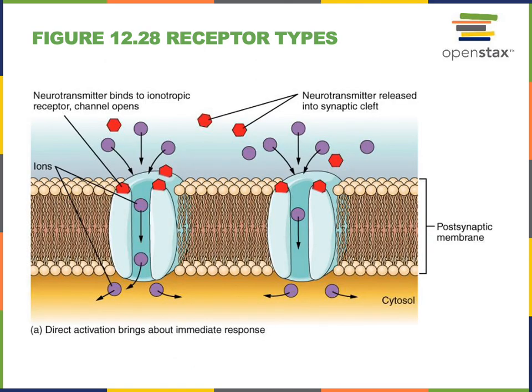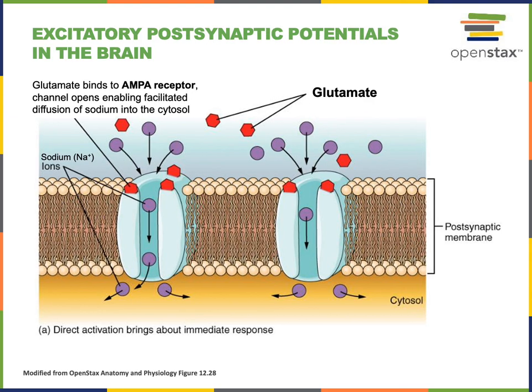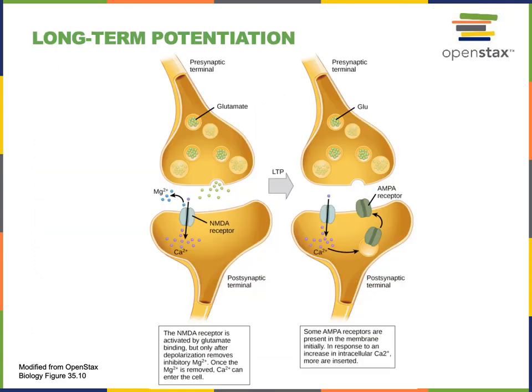To understand the mechanism of long-term potentiation, we must examine the function of ligand-gated ion channels in the brain that respond to the neurotransmitter glutamate. Glutamate binds to AMPA receptors, which are ligand-gated sodium ion channels, so that when glutamate binds to the AMPA receptor, the sodium channel opens, creating a depolarizing graded potential. The mechanism of long-term potentiation also involves another ligand-gated ion channel — a glutamate receptor known as the NMDA receptor.